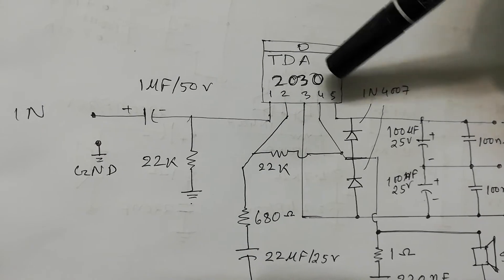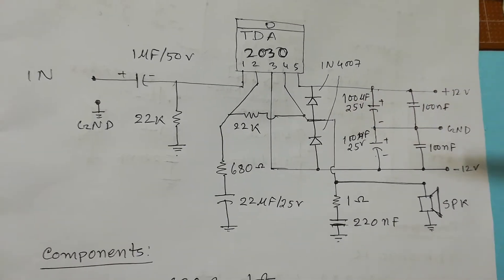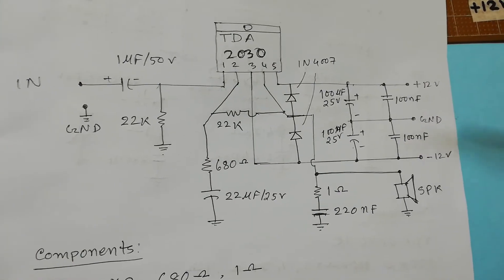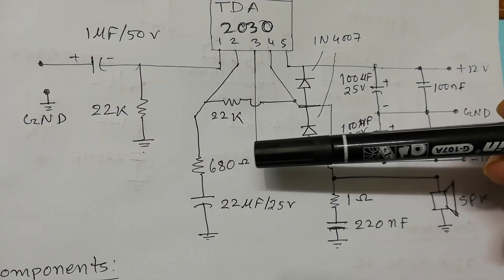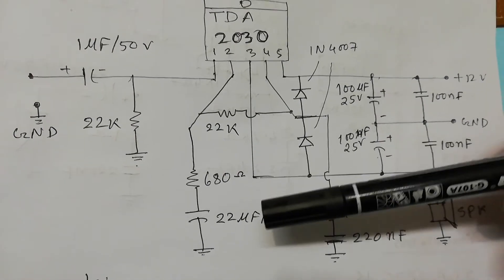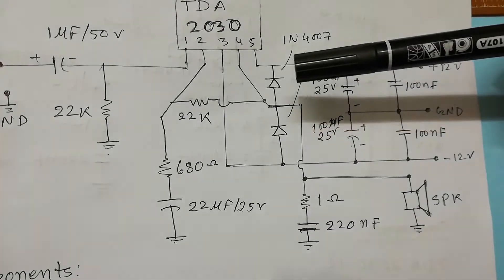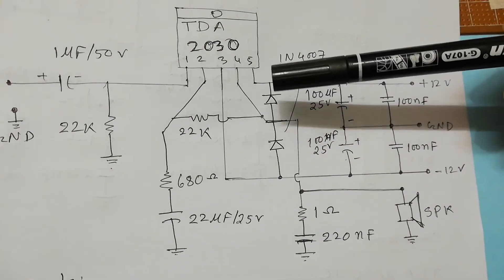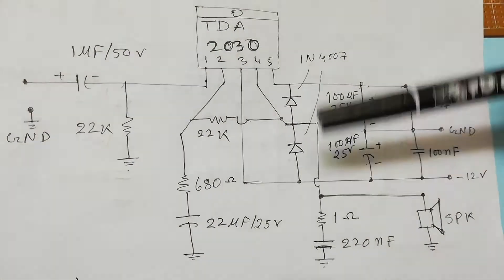And between pin number two and four, I connected 22K resistor. And from pin number two to ground, I connected 680 ohm resistor with 22 microfarad 25V capacitor. And here I connected two diodes from pin number three to four and pin number five to four in this way.